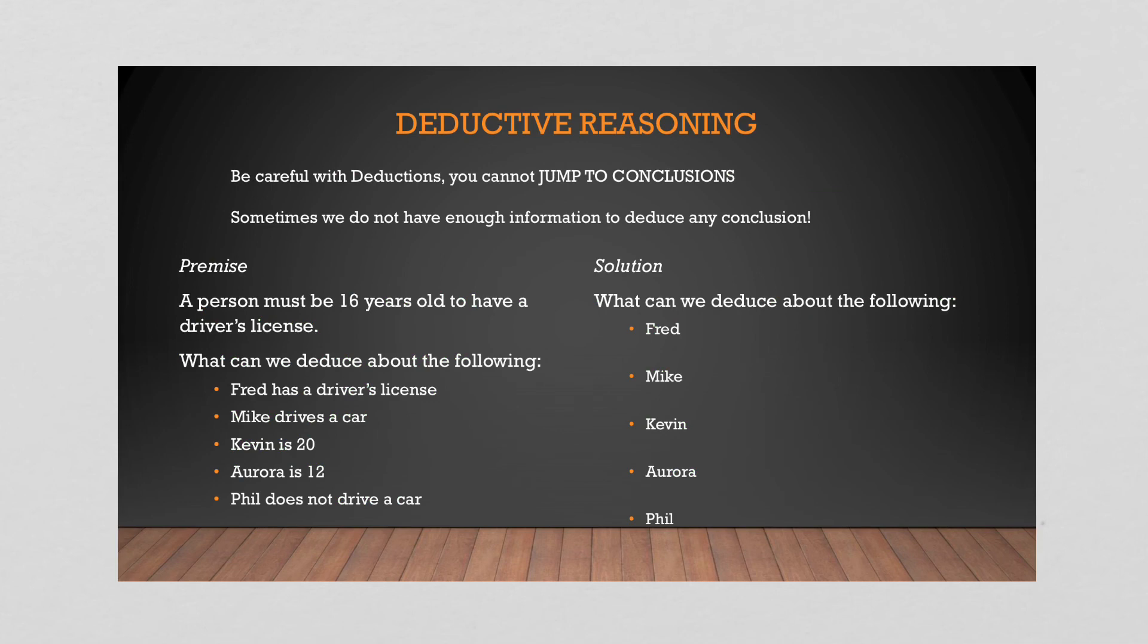Now, the last thing you want to look at here is when you have a list of premises and you're trying to come up with solutions. If you're a fan of Office Space, this gentleman wants to create a jump to conclusions mat where you can jump to a specific conclusion. Do not do that here, okay? You need to use the information you have and you can only deduce if the information is valid. Otherwise, it's a nice statement, but there's nothing you can do with it. So here's an example. A person must be 16 years old to have a driver's license. So what can we deduce? So Fred has a driver's license. So Fred has a driver's license and you must be 16 years old. So we know that Fred must be 16 or higher. Mike drives a car. Okay. Good for Mike. It says nothing about Mike's status of age and it says nothing about him having a driver's license. So we actually can't assume anything. He could be driving without a license.